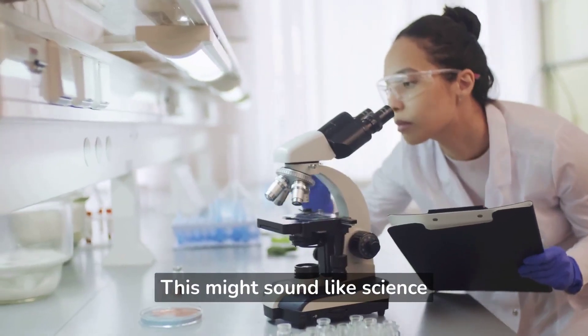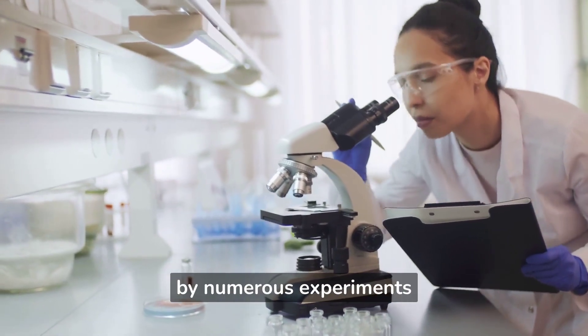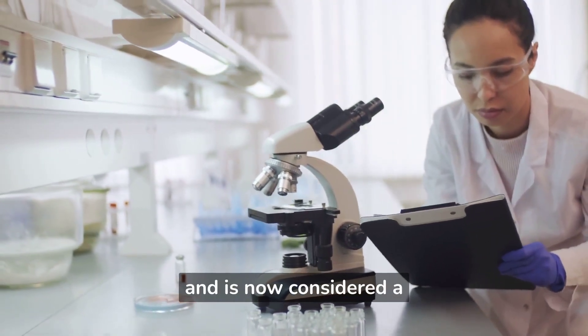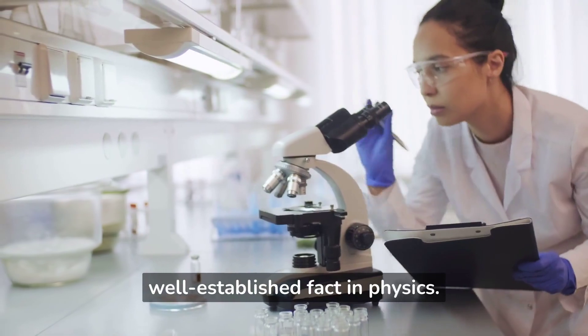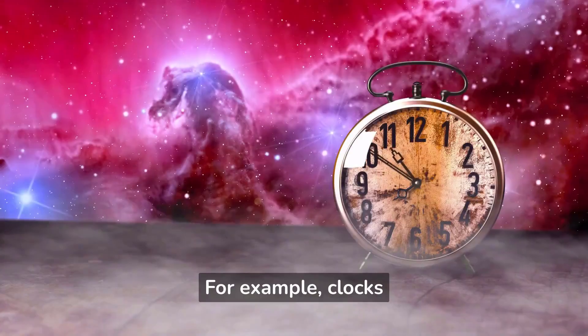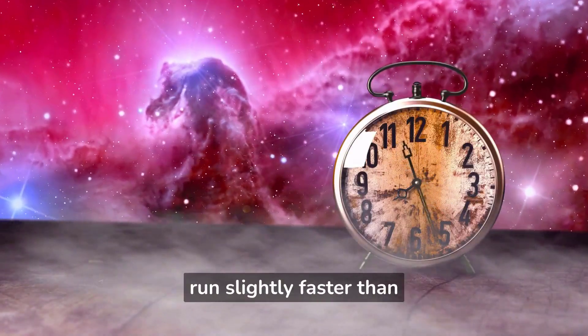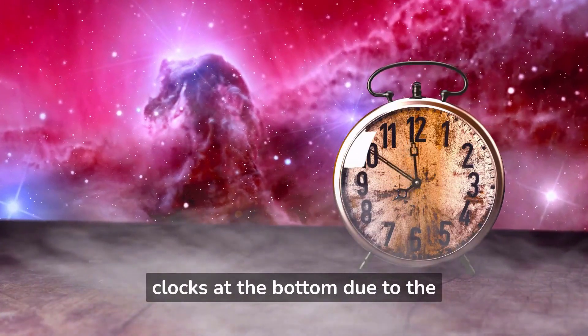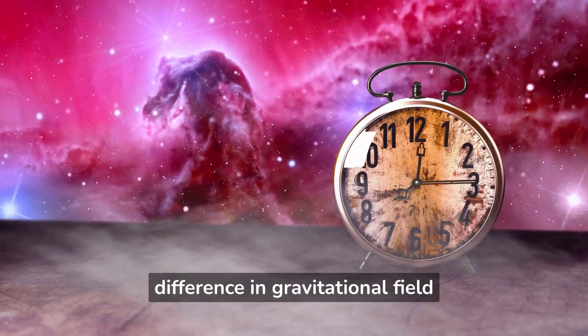This might sound like science fiction, but it has been confirmed by numerous experiments and is now considered a well-established fact in physics. For example, clocks placed at the top of a tall building will run slightly faster than clocks at the bottom due to the difference in gravitational field strength.